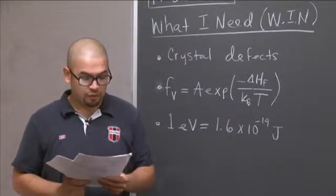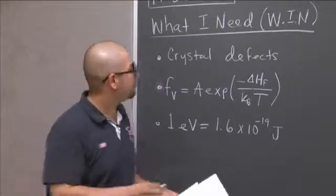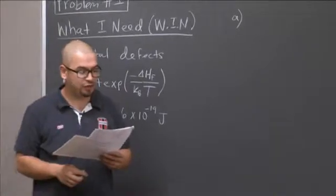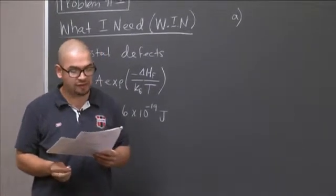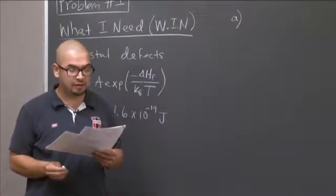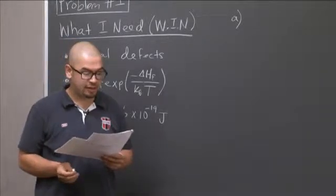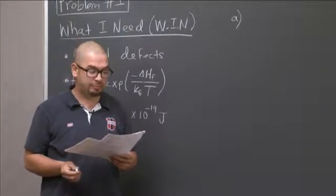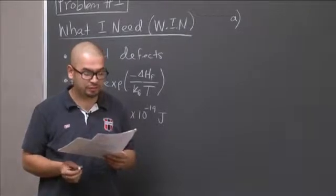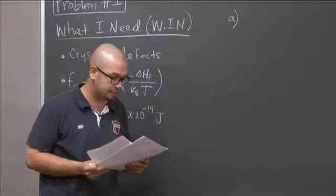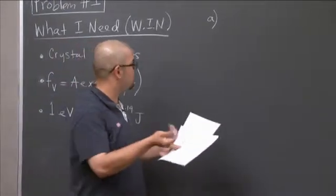So the question asks, for part A, does the Frankel disorder in silver bromide create vacancies of silver plus, vacancies of Br minus, or both? Explain. Ionic radii are 0.67 angstroms for silver plus and 1.96 angstroms for bromine minus. So that's data that's given to us.